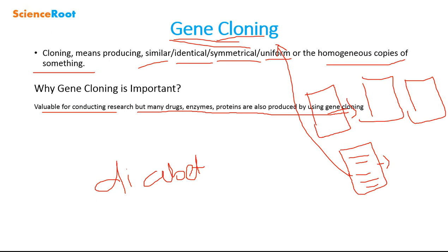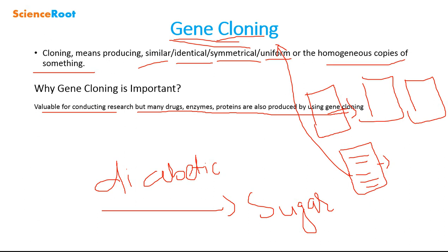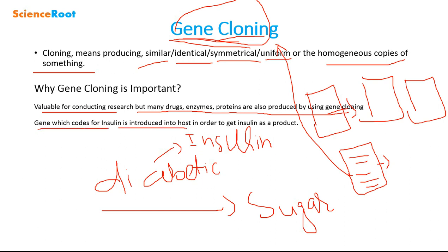A best example of the importance of gene cloning is the case of diabetic patients. Diabetic patients' cells fail to produce insulin, which is very important for controlling the glucose level in the blood. In that case, diabetic patients use commercially available insulin, and that insulin is produced using gene cloning. The gene which codes for insulin is introduced into a host to produce insulin.